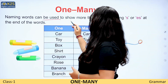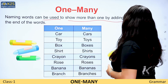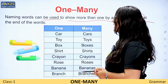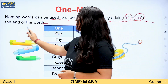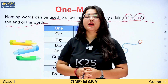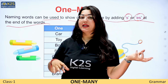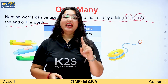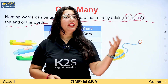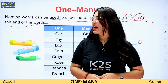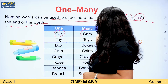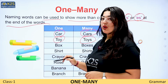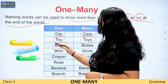Naming words can be used to show more than one by adding S or E-S at the end of the words. When we have more than one, we add S or E-S. Car — cars. Toy — toys.